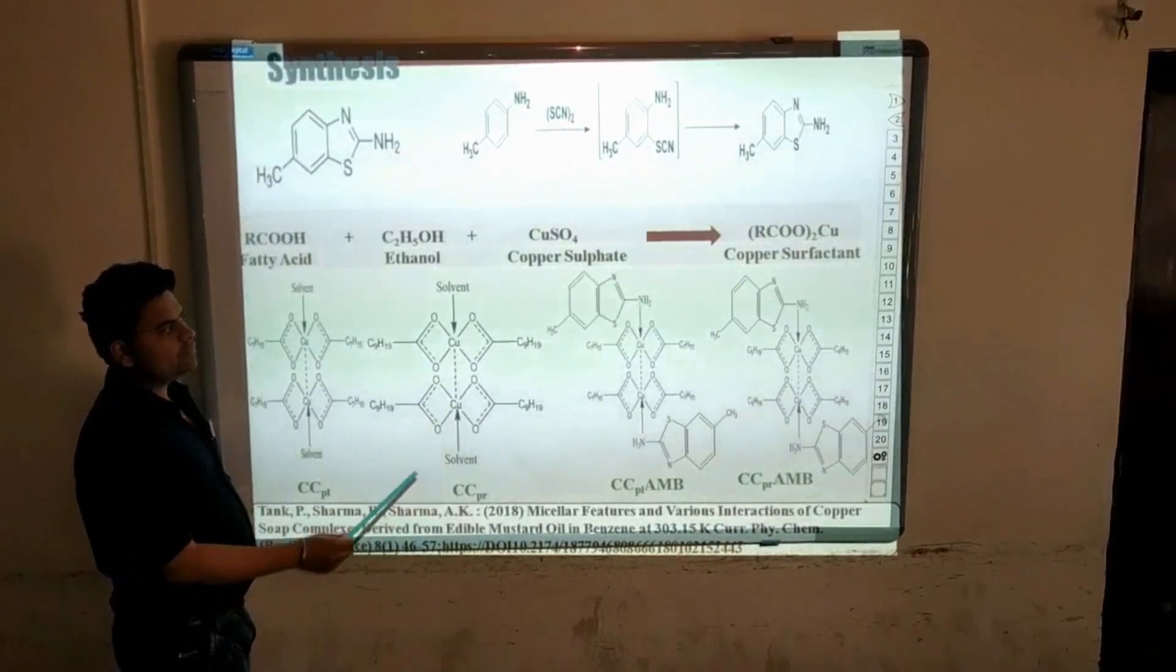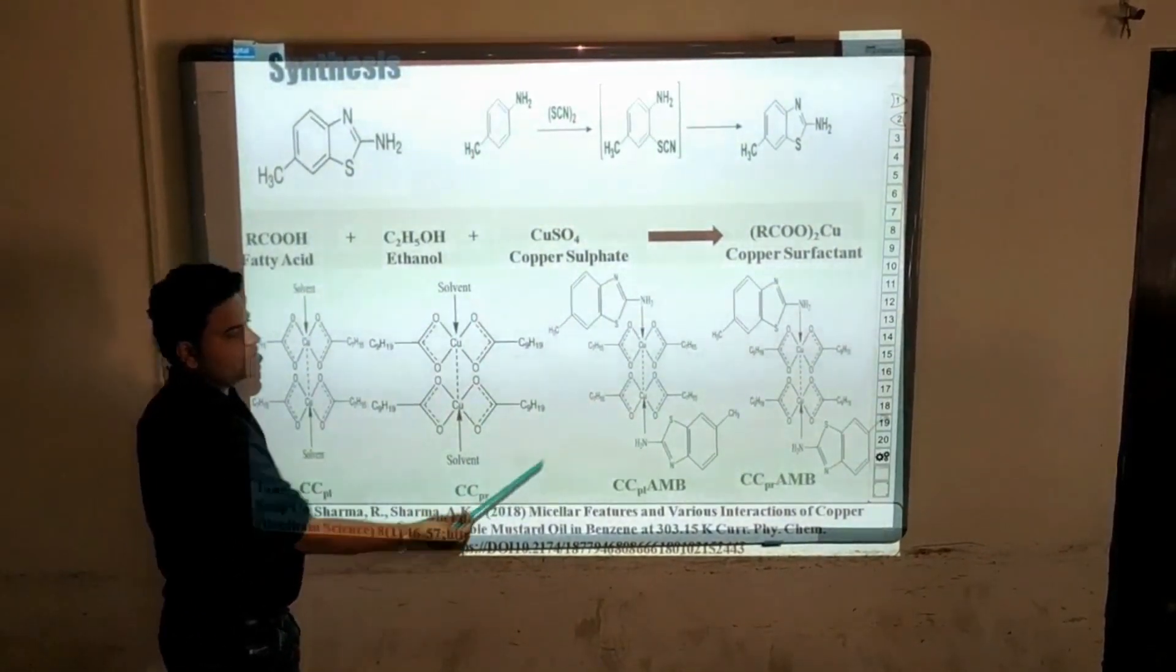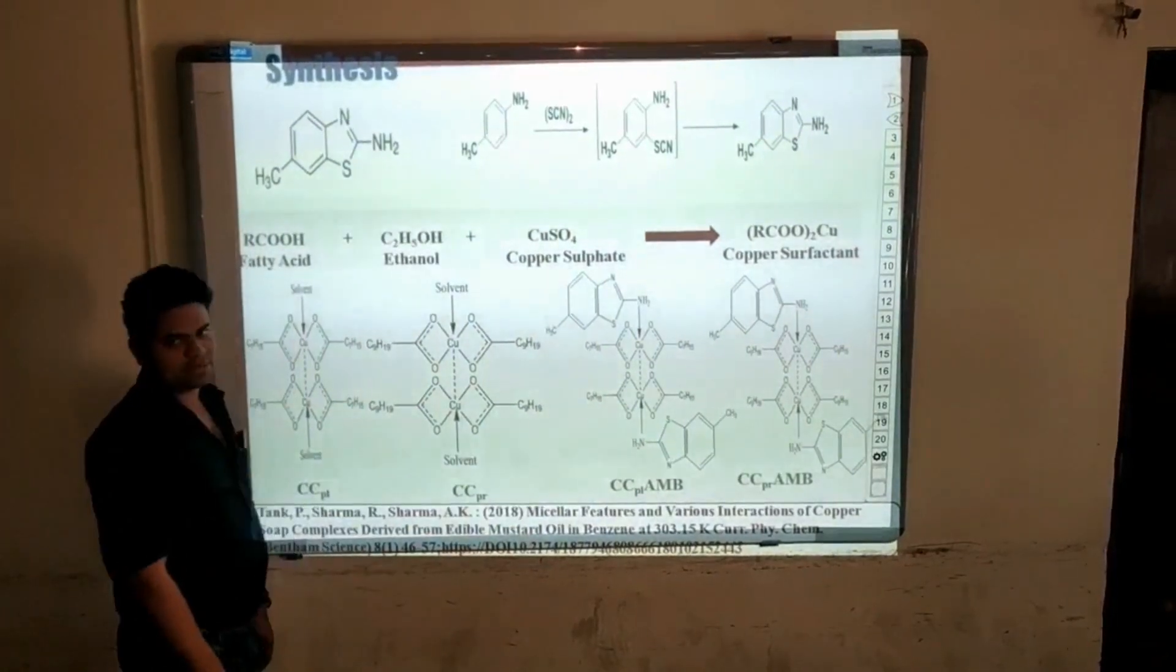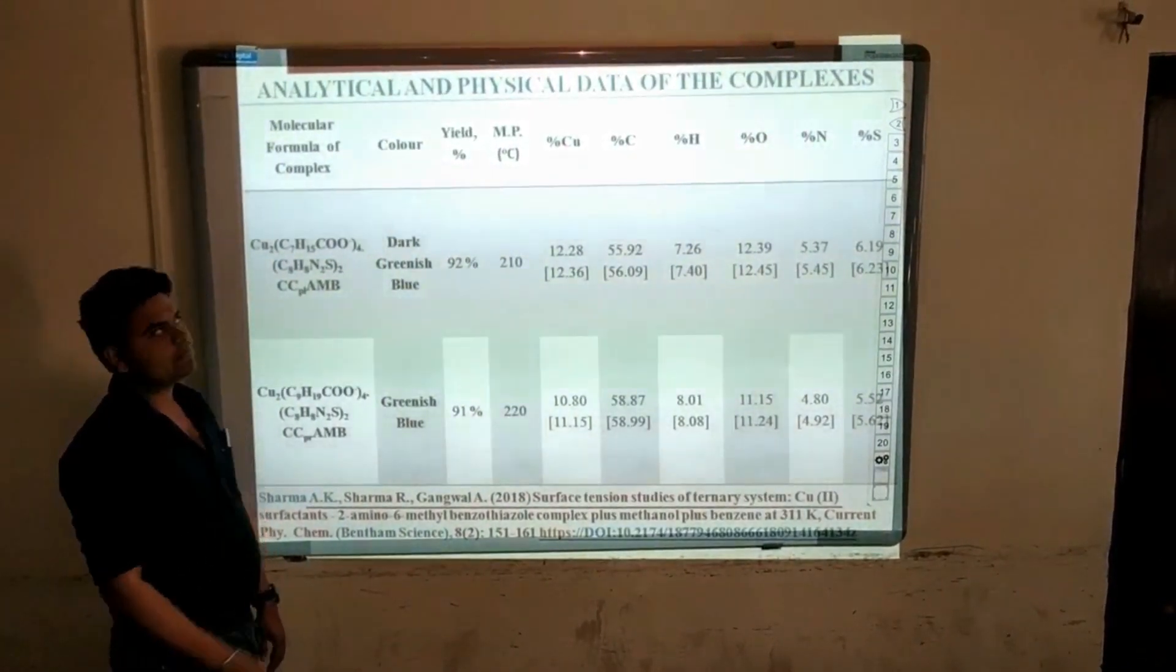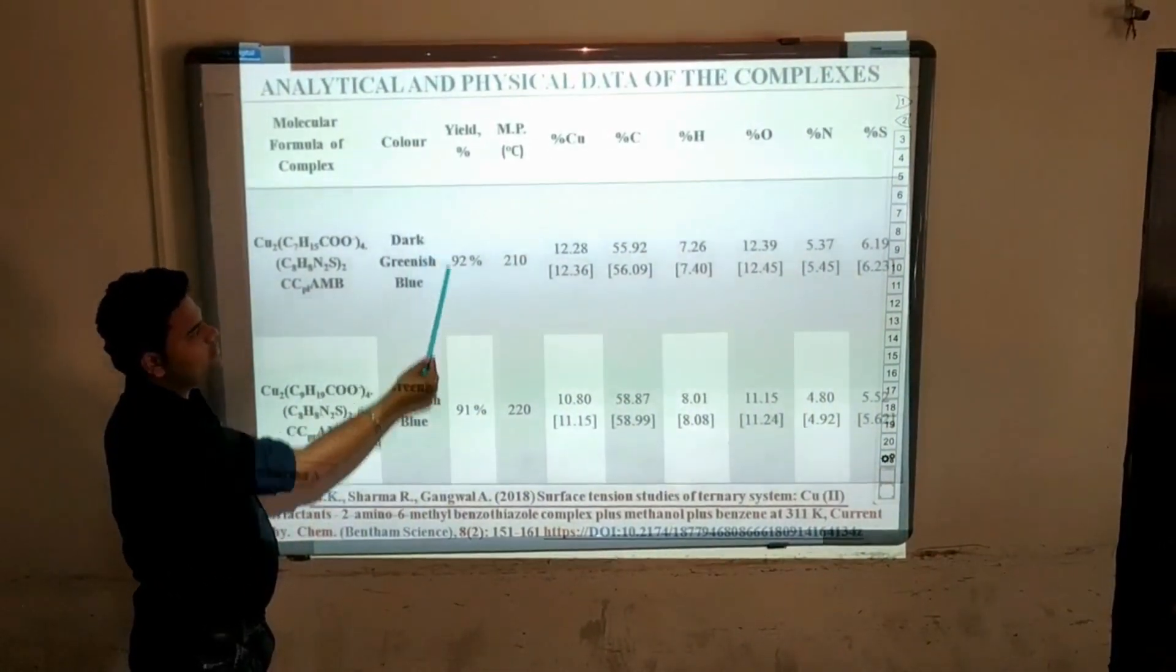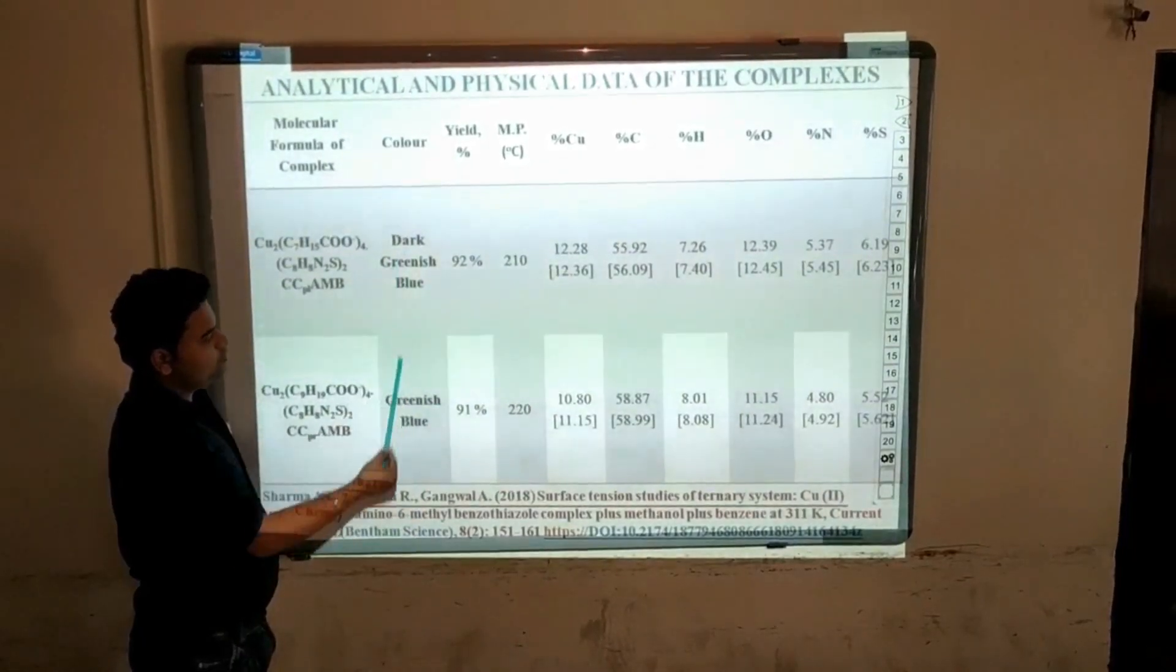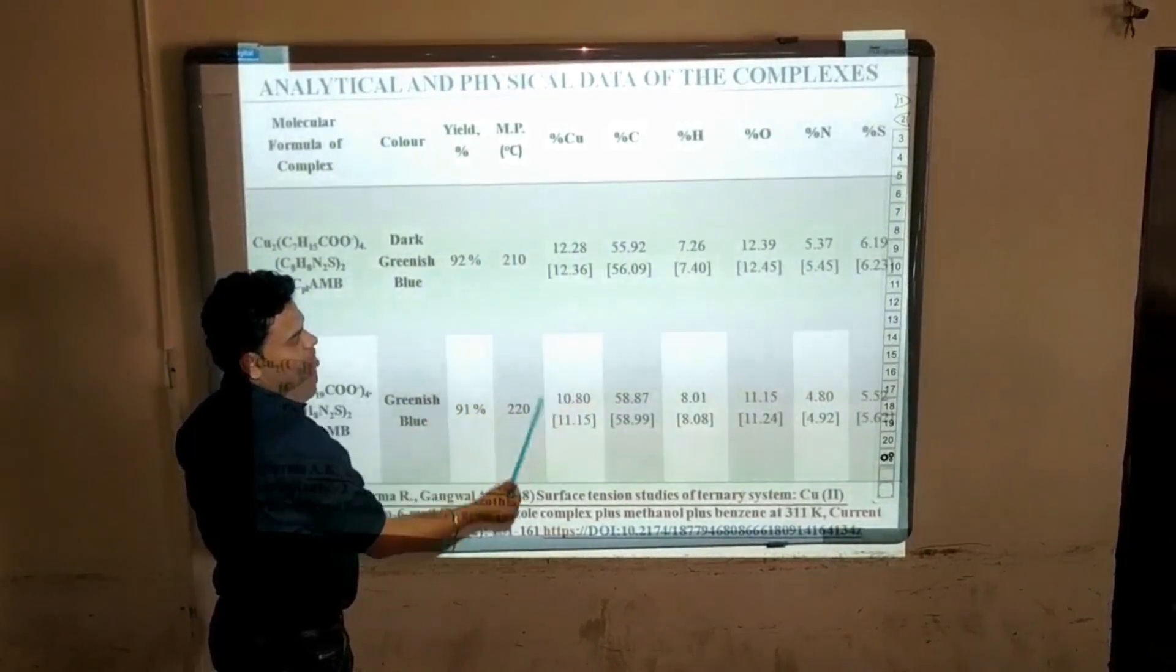Finally, we synthesize the complexes by using the ligand and copper surfactants and these are the structures of both complexes. After synthesis, we characterize the complexes by analytical and physical data. As we can see here, we obtained 90% yield in dark greenish blue color and these are the results of different elements present in our complexes.